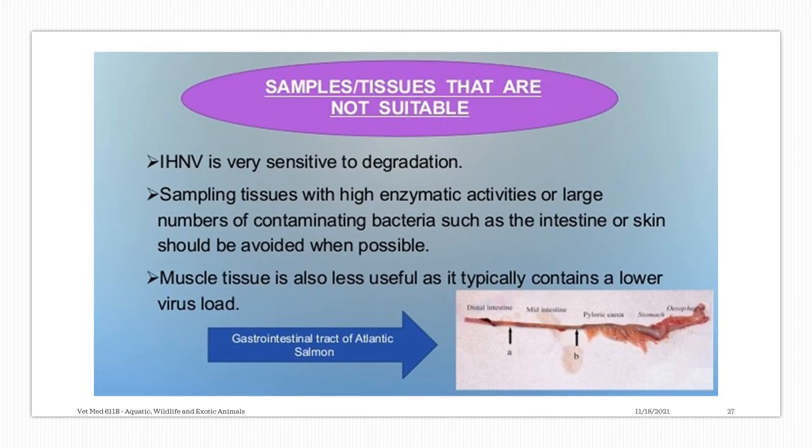In this diagram, you have the GIT, or gastrointestinal tract of the Atlantic Salmon, and the GIT is considered to be a not-suitable tissue for samples for virus detection.